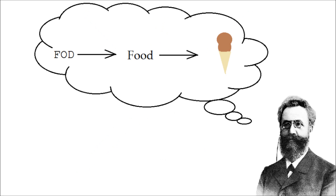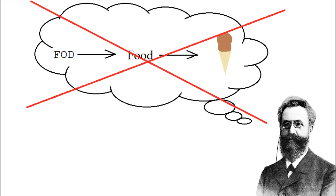Sixth, Ebbinghaus avoided using any mnemonics in learning the syllables. He didn't attempt to create any associations between the syllables and real words or objects. He did this because he wanted to test the effect of repetition on memory, not some other process.